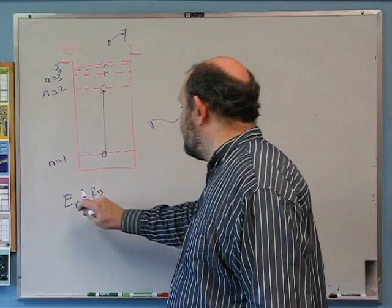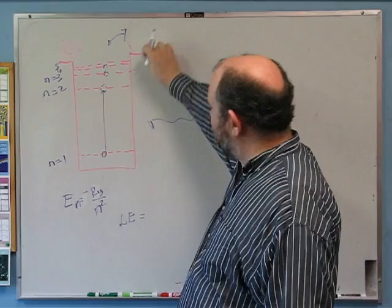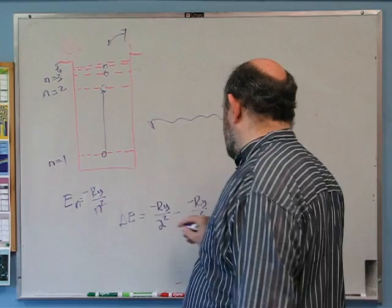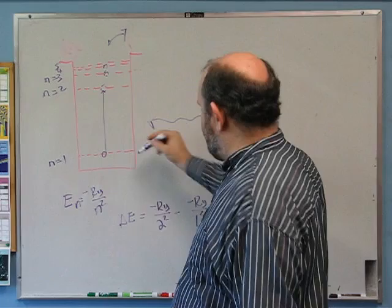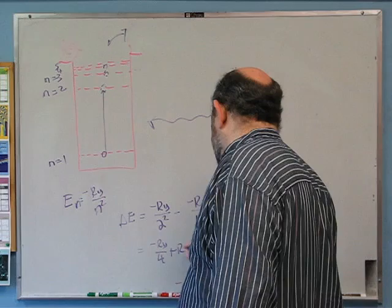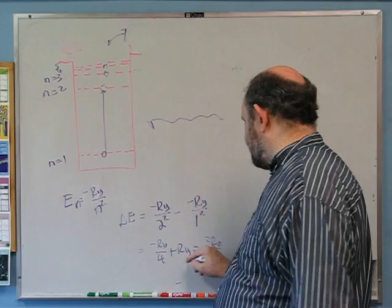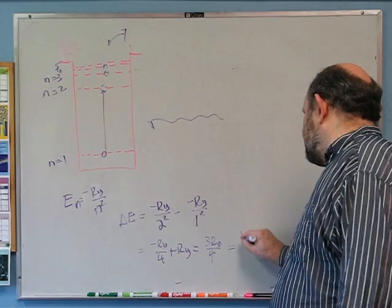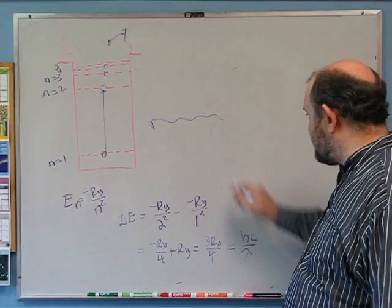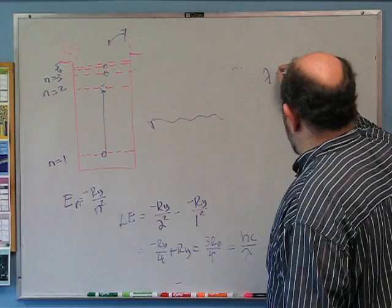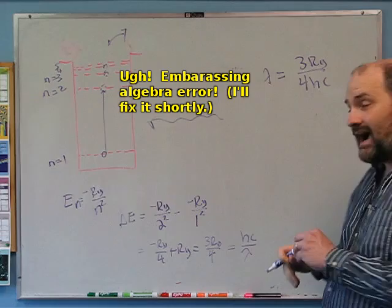The lowest energy the atom could absorb is the n equals 2 to n equals 1 transition — any other transition will be higher energy than that. The lowest energy photon is the longest wavelength photon, which is what was asked. So delta E is going to be minus Ry over 2² minus minus Ry over 1², which is minus Ry over 4 plus Ry, which equals 3Ry/4. And that equals hc over lambda for the longest wavelength photon that could be absorbed.